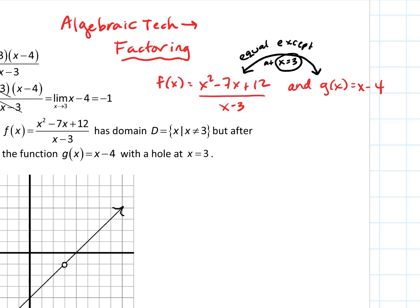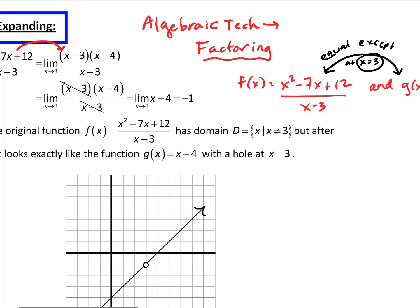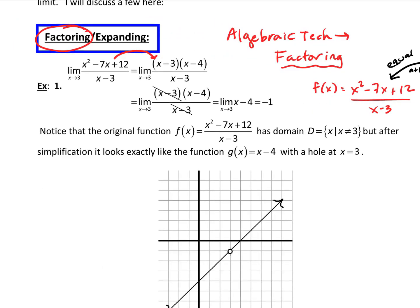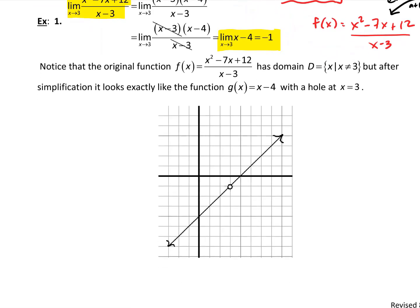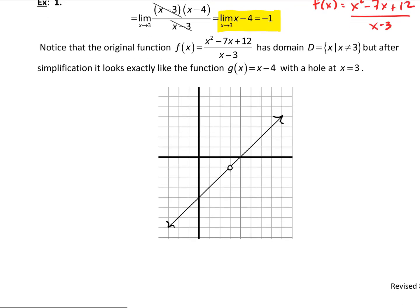Because we can take the limit of x-4, we follow the limit all the way through to get the answer. The limit of the original function has to be the same. Intuitively, f(x) is simply g(x) with a hole at x=3. When looking at a limit, we're concerned about behavior around the point, not what happens right at x equals 3.